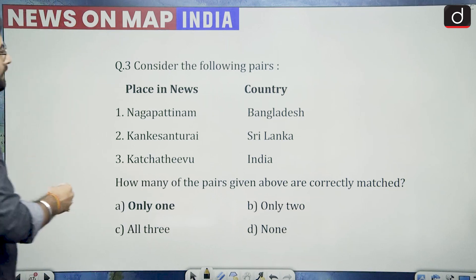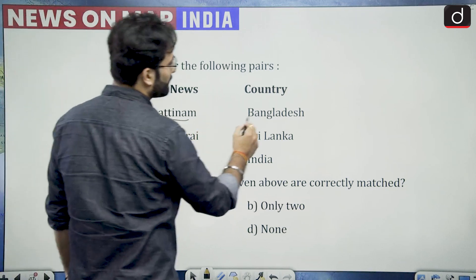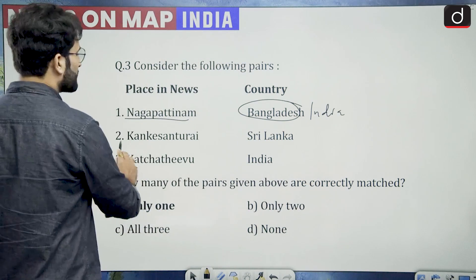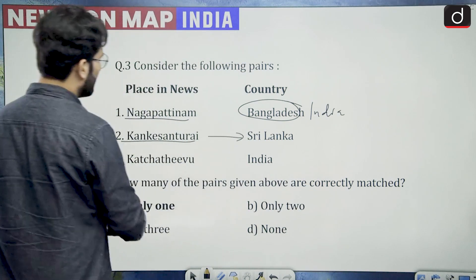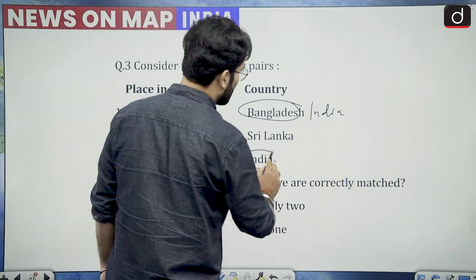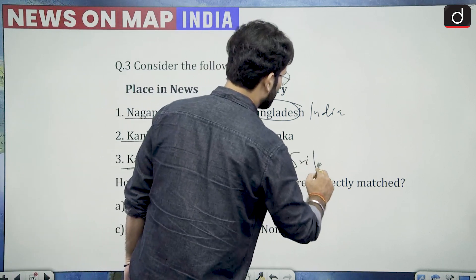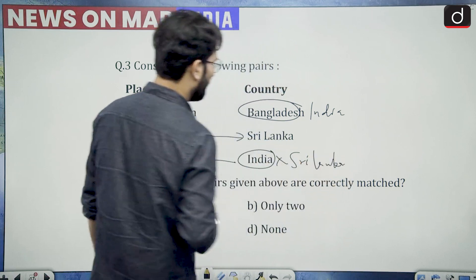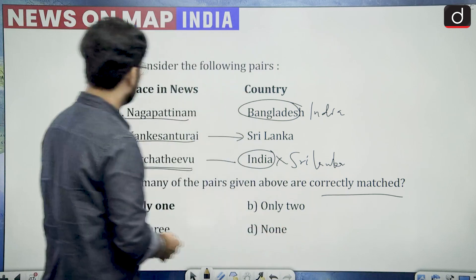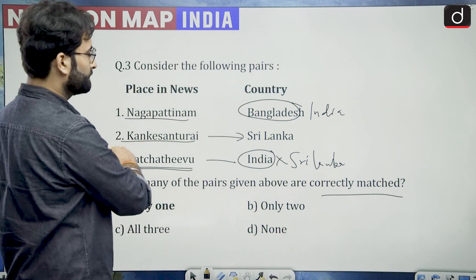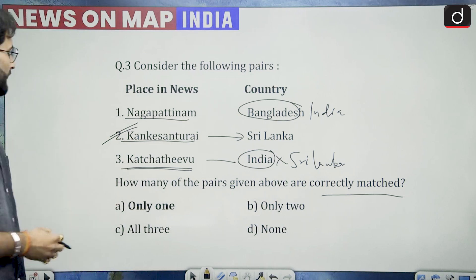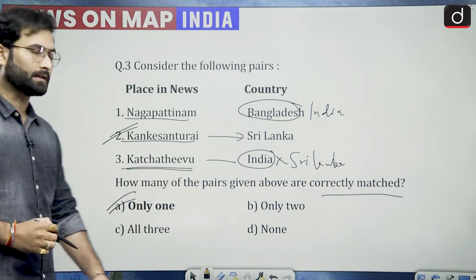Consider the following pairs: Nagapattinam — it is not in Bangladesh, it is in India. Kankesanturai — it is in Sri Lanka. And Katchatheevu — this is in Sri Lanka and not India, as of now. So how many of the pairs are correctly matched? Only one pair is correctly matched.